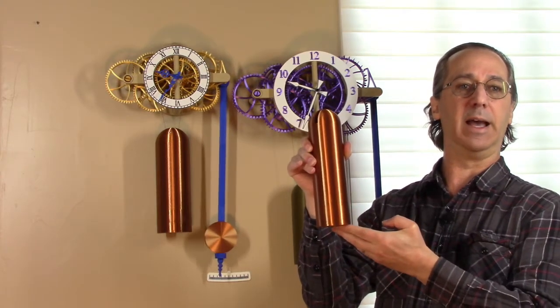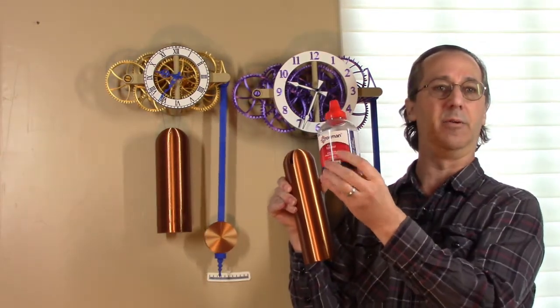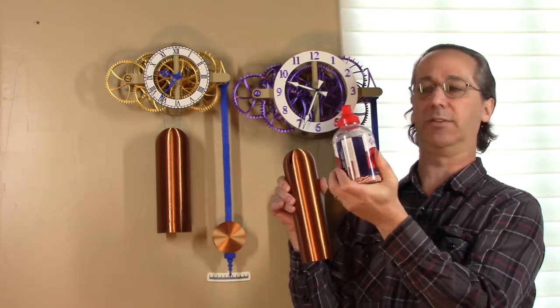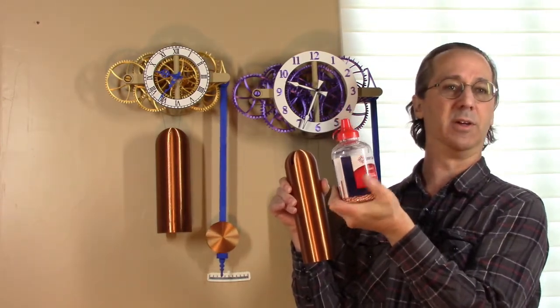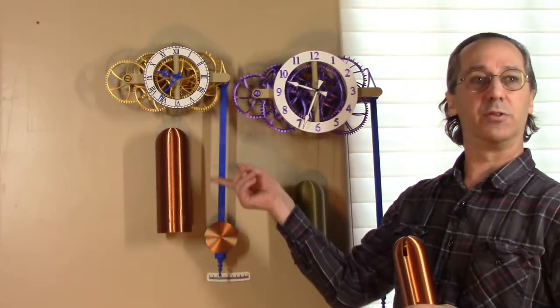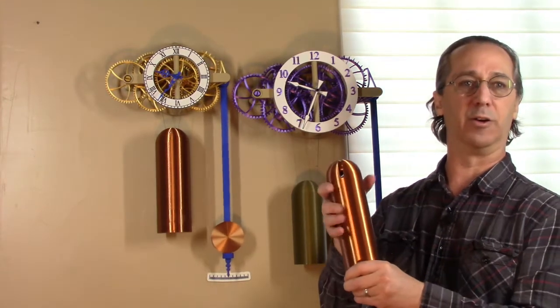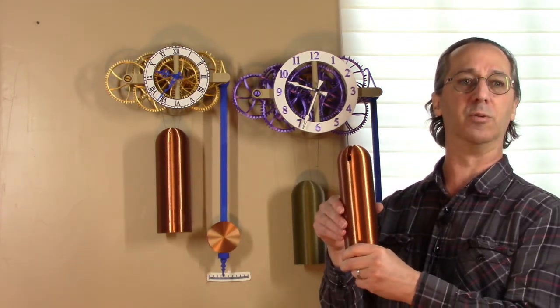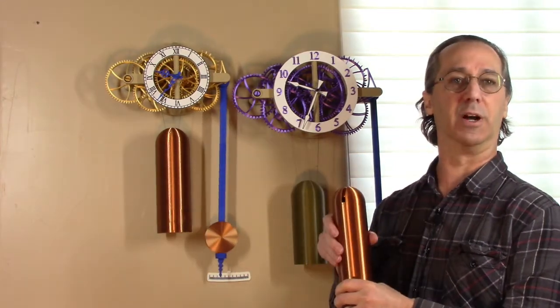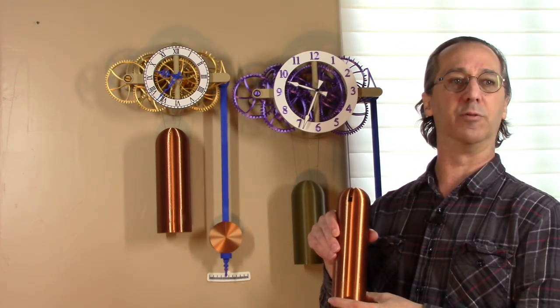This jar of BBs, right now on Amazon, is around nine dollars. That's 6,000 BBs, weighs about four and a half pounds. The largest weight shell took two and a half jars of BBs. A smaller weight shell, less than two jars. So under $20-25 for the largest clock is all you need to fill the weight shells.